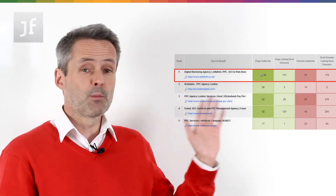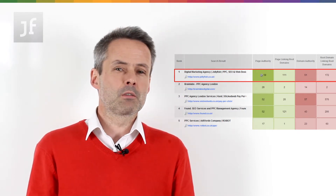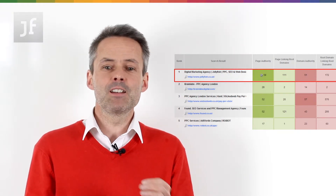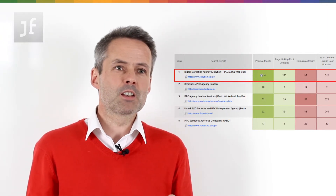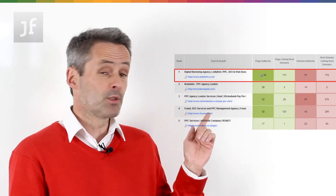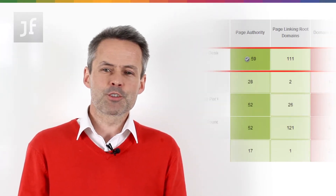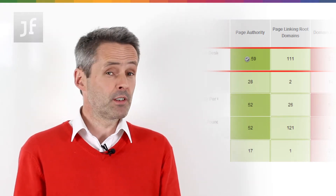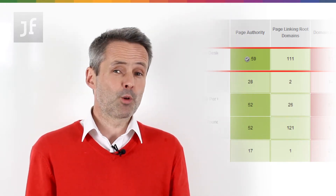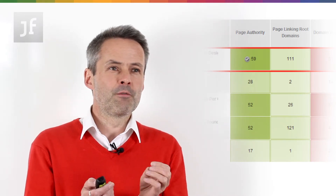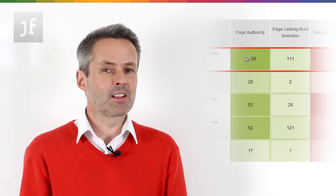The good news for Jellyfish is that we're in the number one slot in natural search rankings. Looking at these metrics, the green blocks — page authority — and the red blocks — domain authority — indicate we should be in that number one position based on our backlink profile. But what's slightly more perplexing is that the agency in the number two slot has completely different, much weaker metrics than us, yet paradoxically better metrics than the agency in the third slot.